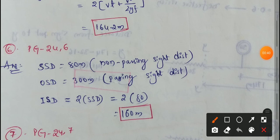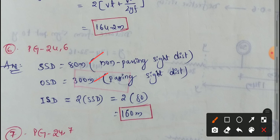I will choose a question. For the given road, Stopping Side Distance is 80 meters, and Passing Side Distance is 300 meters. Passing Side Distance means OSD — Overtaking Side Distance. We have SSD as non-passing side distance, and OSD, the Passing Side Distance, is also mentioned.